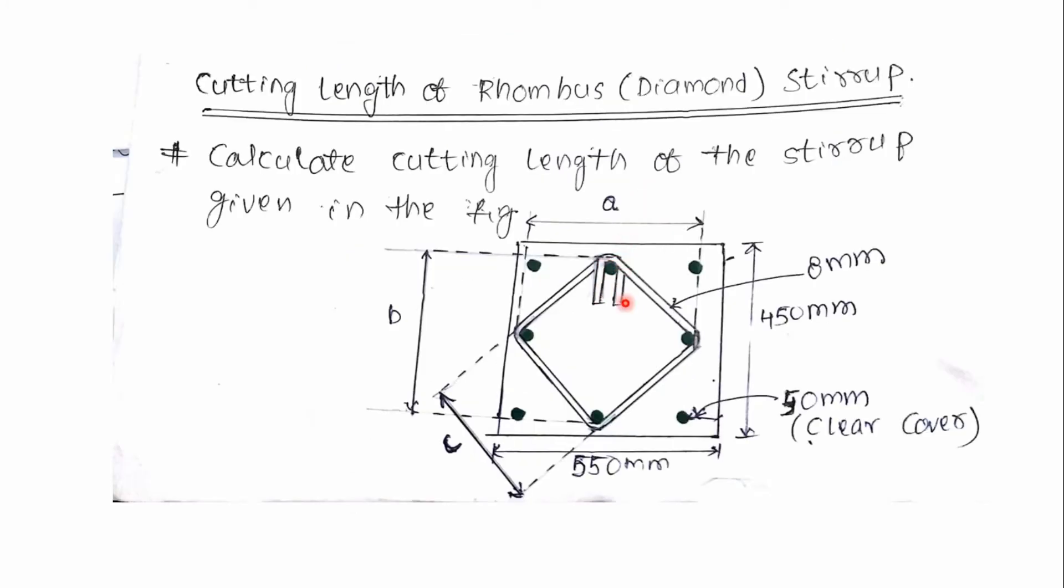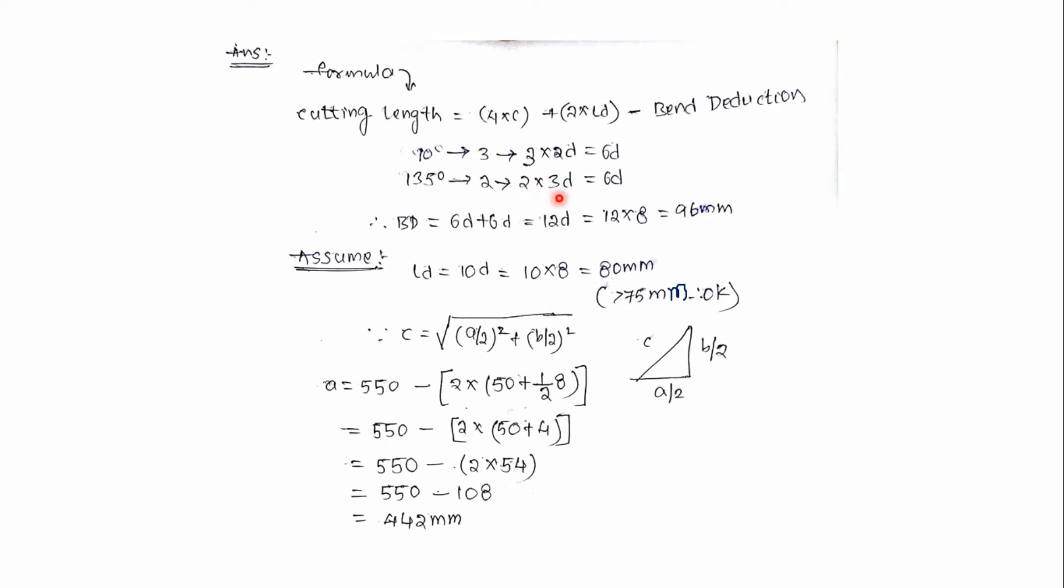Similarly here we have 2, 135 degree bends, so 2 multiplied by 3d which equals 6d. 6d plus 6d equals 12d.